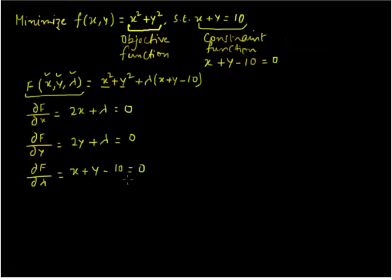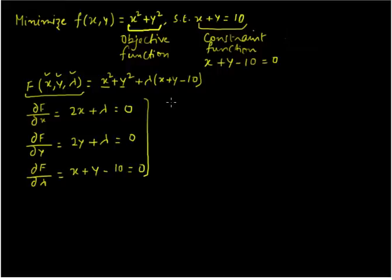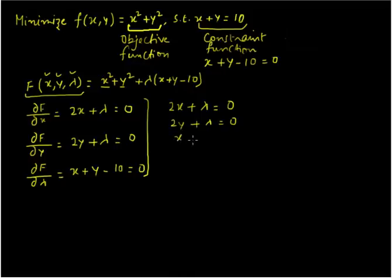This is a simple enough minimization problem, so we can do it without even using matrix algebra. Let us write down these equations: 2x plus lambda is equal to 0 (equation 1); 2y plus lambda is equal to 0 (equation 2); and x plus y minus 10 is equal to 0 (equation 3).